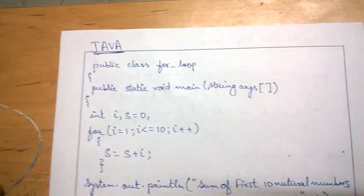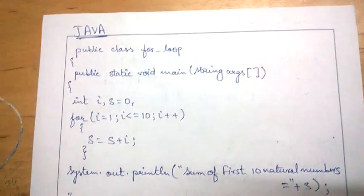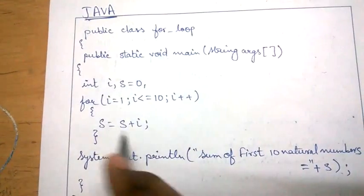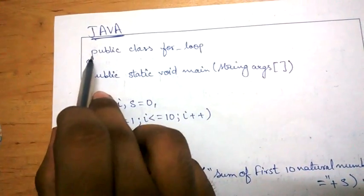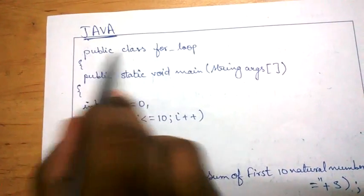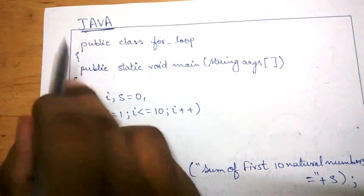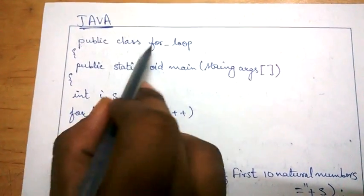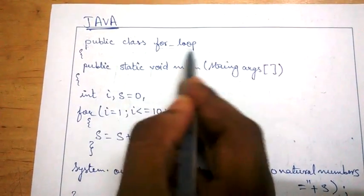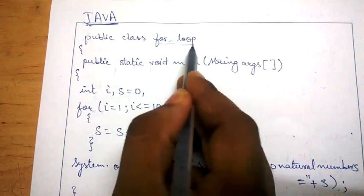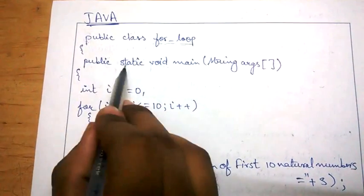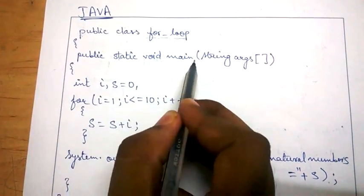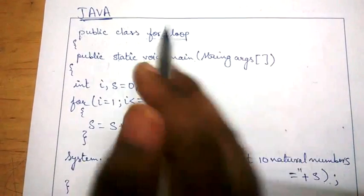Now I am going to show you a simple program to find the sum of 10 natural numbers. First I will show you in Java. In Java, we first have to create a class — declare a class. So we write: public class ForLoop. This is the name of the class; you can write anything here like xyz.